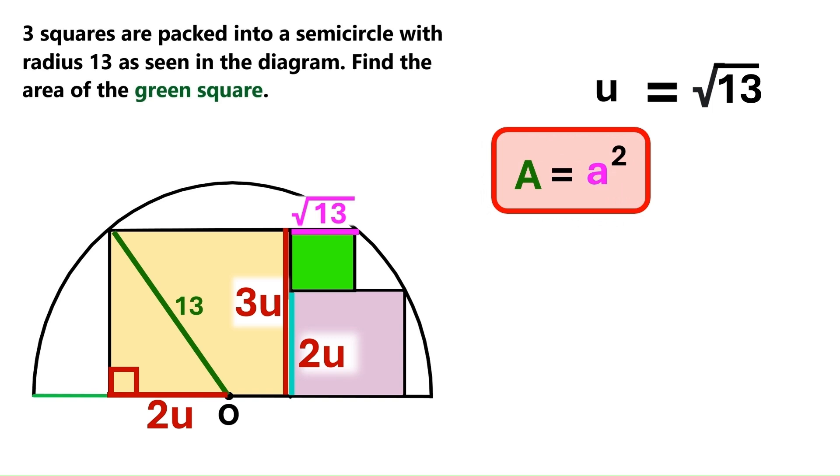The side of the green square is radical 13. So we take the square of that. The square of radical 13 is radical 13 times radical 13 and that equals 13.